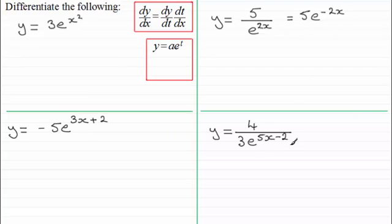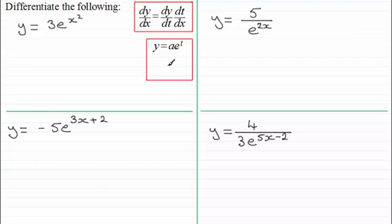You could do a similar thing with the last one — I'll leave that for you to try later. Going back to the chain rule, we should be familiar with differentiating y equals a e to the power t with respect to t. It's a standard result: dy by dt equals the same thing again, a e to the power t.